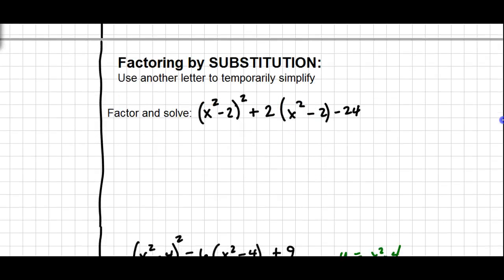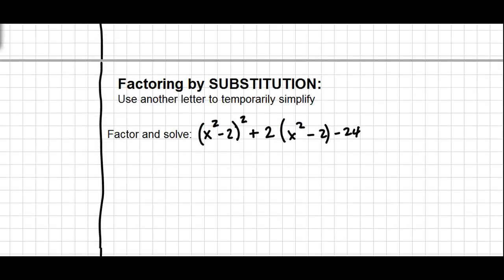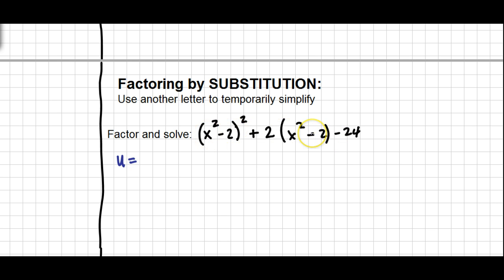Our other topic today is factoring by substitution — it's technically another factoring by grouping situation. All you're going to do is use another letter to temporarily simplify. You want to look for something that's repeated. Here, x² minus 2 shows up in two sets of parentheses, so I want to label that something else. Usually we use the letter U for substitution, but use any letter other than the one already in the problem — don't use x, use something else.